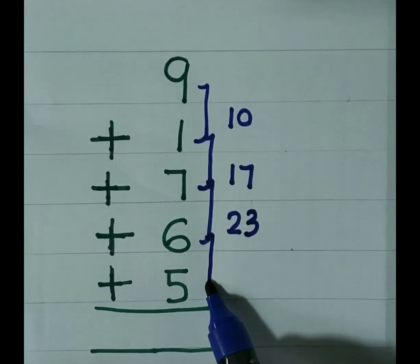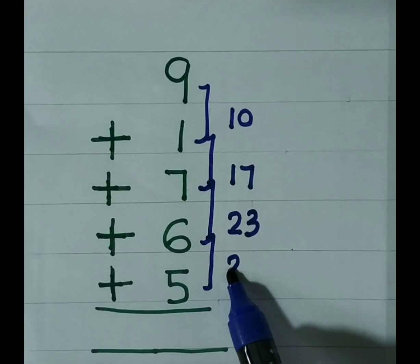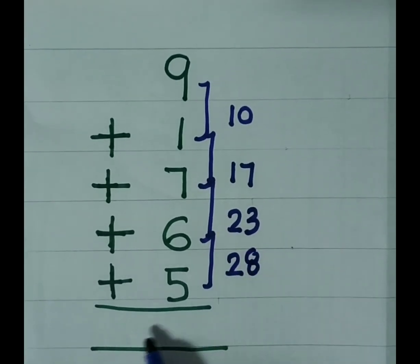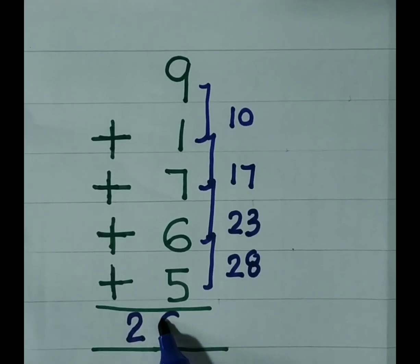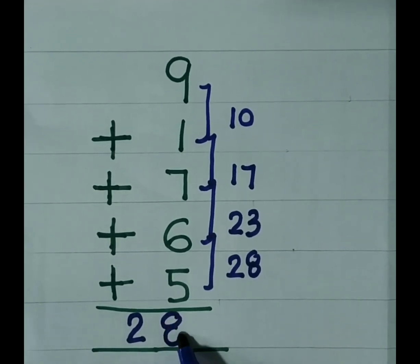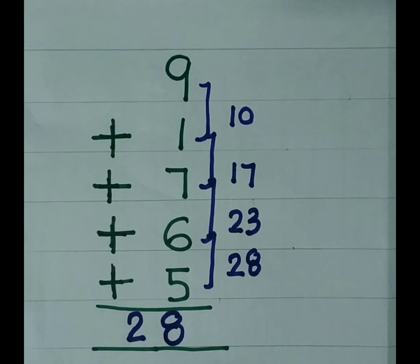23 plus 5. 23 plus 5 is 28. So 28 you have to write like this. 2 here and 8 at the unit place. The answer is 28.